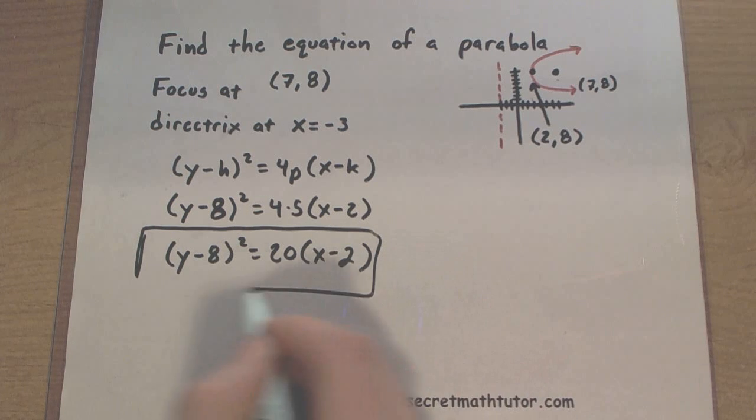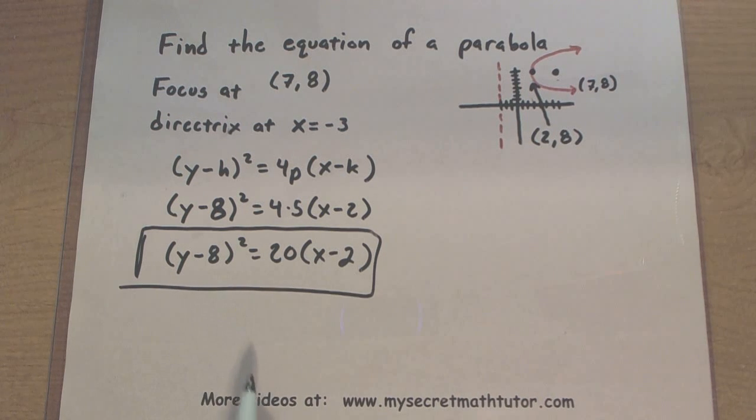So this equation right here, (y-8)² equals 20(x-2), represents the equation of our parabola.